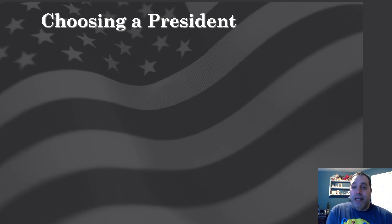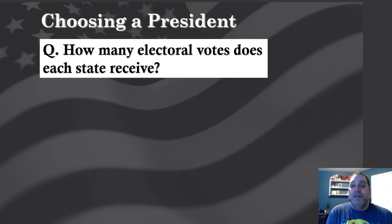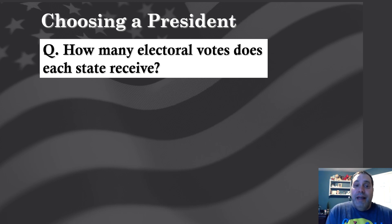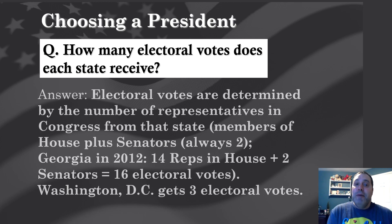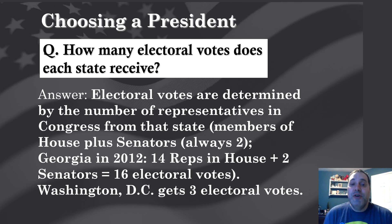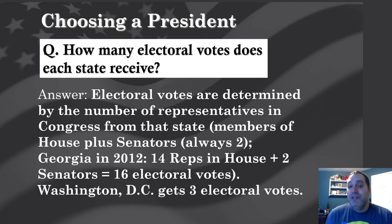How many electoral votes does each state receive? You're trying to win the electoral vote to win the presidency, so how do we know how many votes each state gets? It is not based solely on population. Electoral votes are decided by how many members you have in Congress — your House representatives plus your two senators. House seats are roughly based on population, but Senate seats are two per state regardless of population, which skews the results.